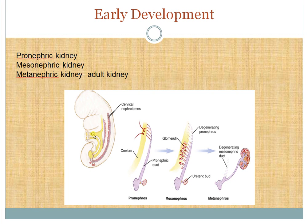Development of the pronephric kidney starts at the end of the third week of gestation, as demonstrated in mouse studies. Signals from the surface ectoderm induce cells in the intermediate mesoderm to differentiate into the nephric duct. The pronephros is formed from five to seven segments of the intermediate mesoderm, which condense to form tubular vesicles. The proximal ends open into the coelom and the distal ends join to form the pronephric duct. The pronephros is rudimentary and never forms functional nephrons, but it is crucial for normal kidney development.